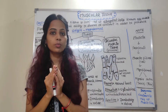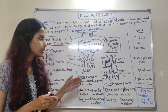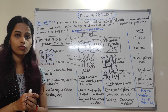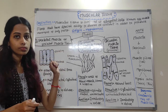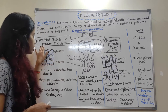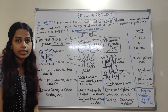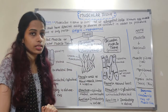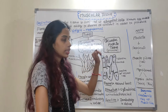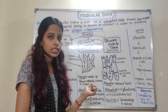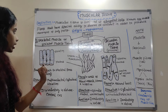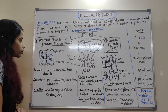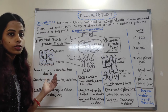There are three types of muscular tissue, divided on the basis of their function and structure. First is skeletal muscle or striated muscle, second is smooth muscle or unstriated muscle, and third is cardiac muscle or striated muscle.